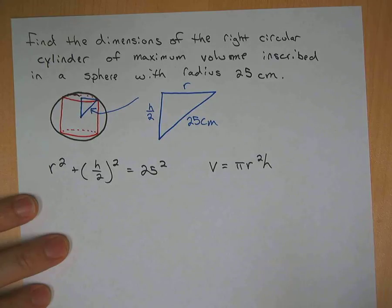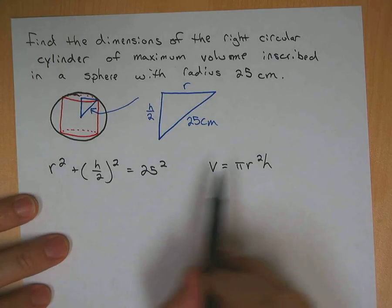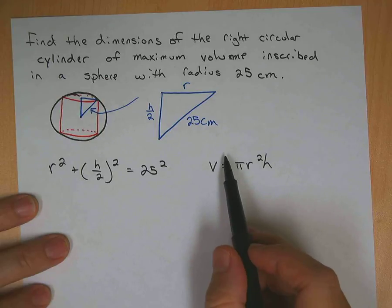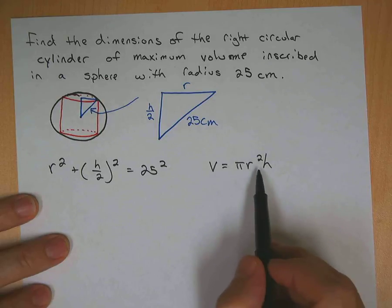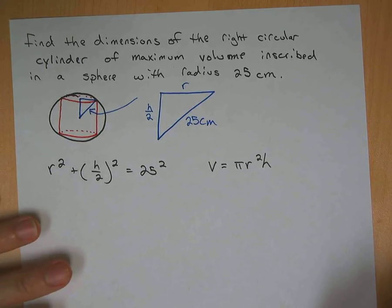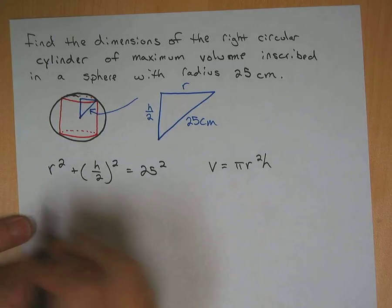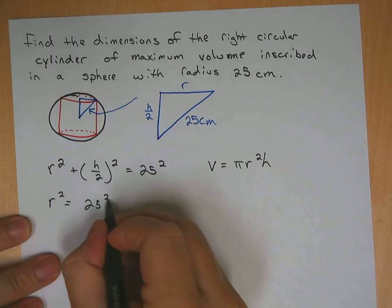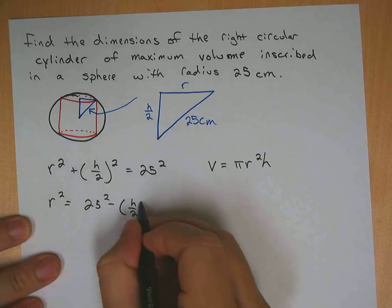So what we're going to do here is we're going to try to solve for one or the other of the variables, because when we take the derivative of this, we would like this to only have one variable over here. Instead of the R and the H, we want to get rid of one or the other. So in order to do this, I'm going to solve this equation for R. So we get R squared equals 25 squared minus H over 2 squared.